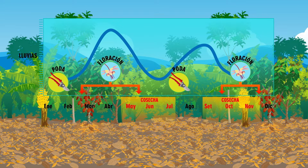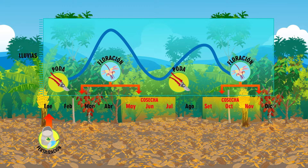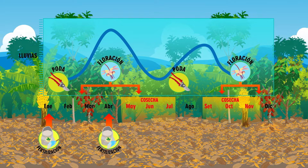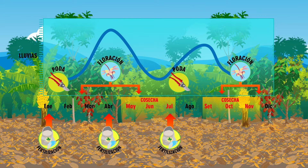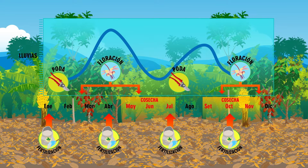Four applications a year is an adequate alternative to cover the needs of the crop in its main stages. The first application is made at the end of the peak production period at the end of the year, between January and February. The second about three months later, when the big harvest flowers occur. The third fertilization at the end of the production peak, between July and August. And finally, at the time of small flowering and the second production peak, between October and November. In case only two applications a year can be made, one in January-February and the other in July-August.